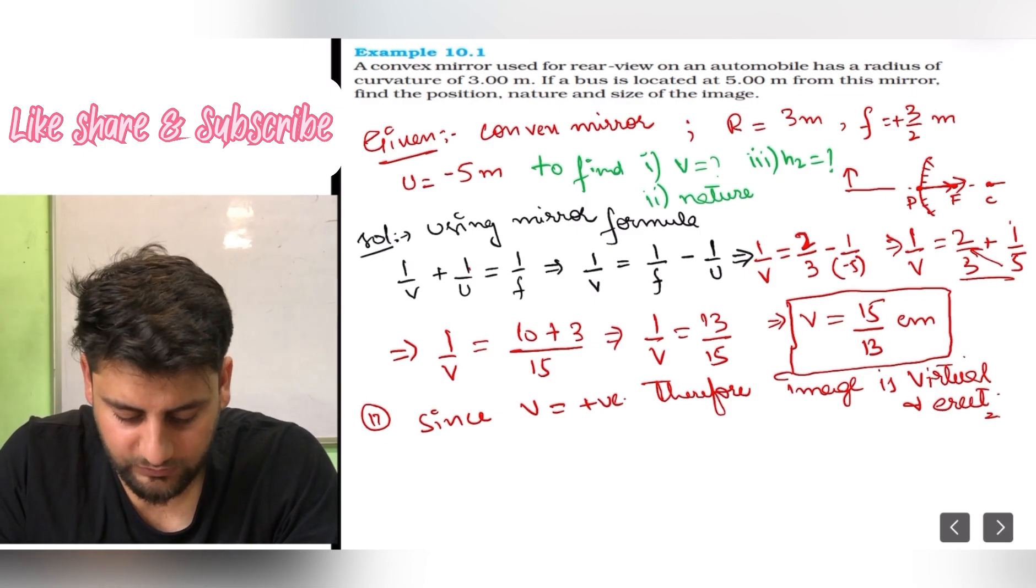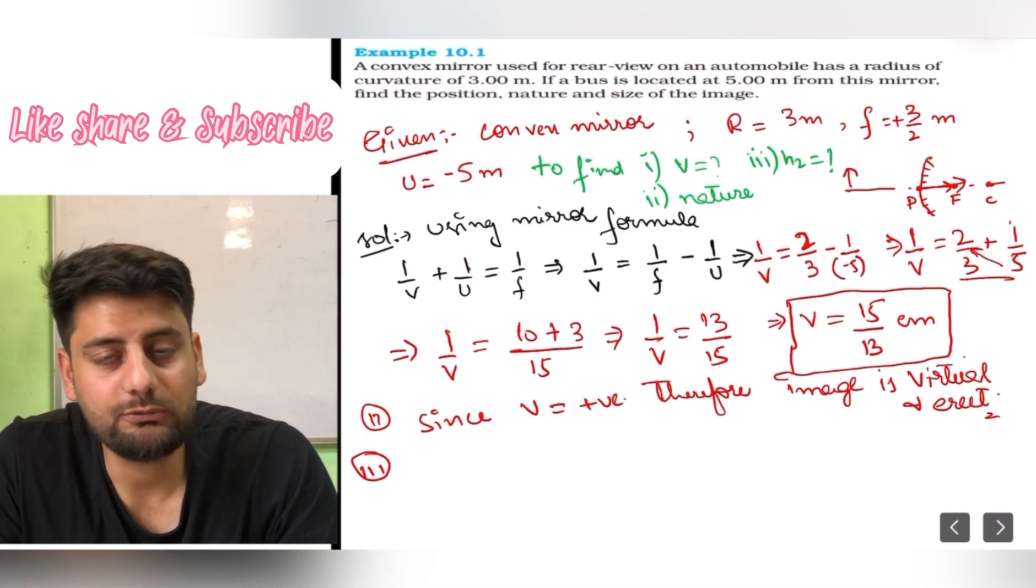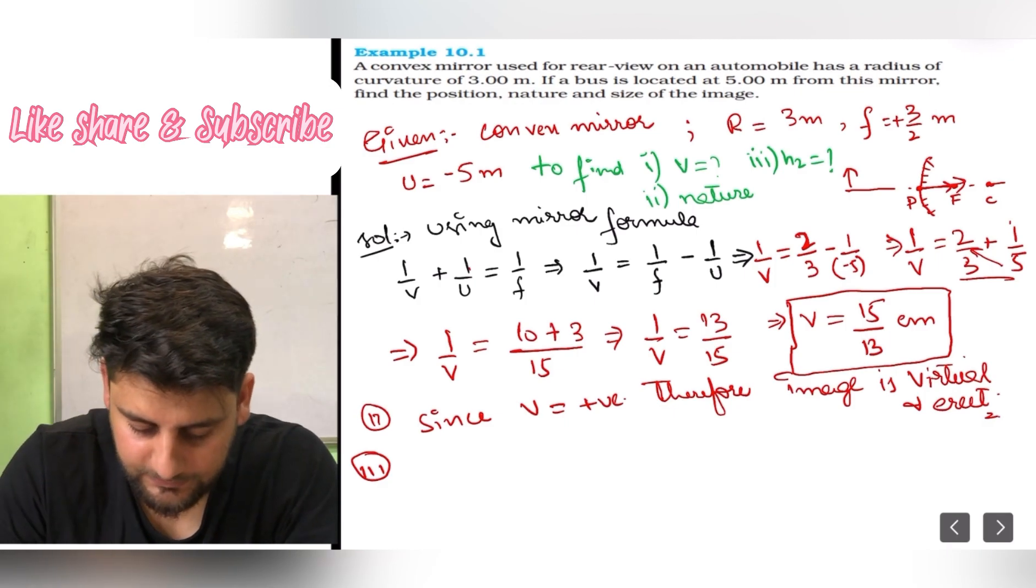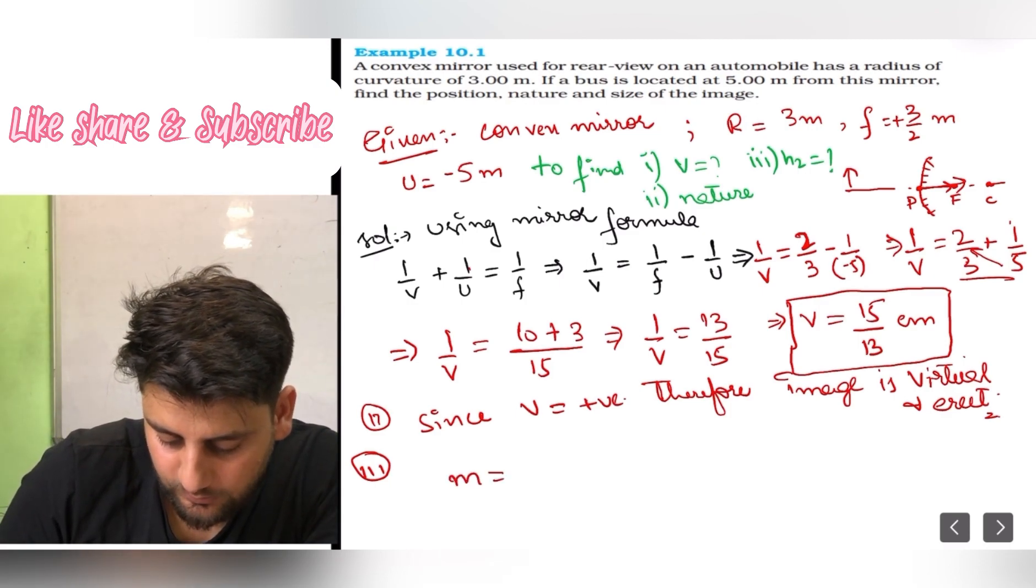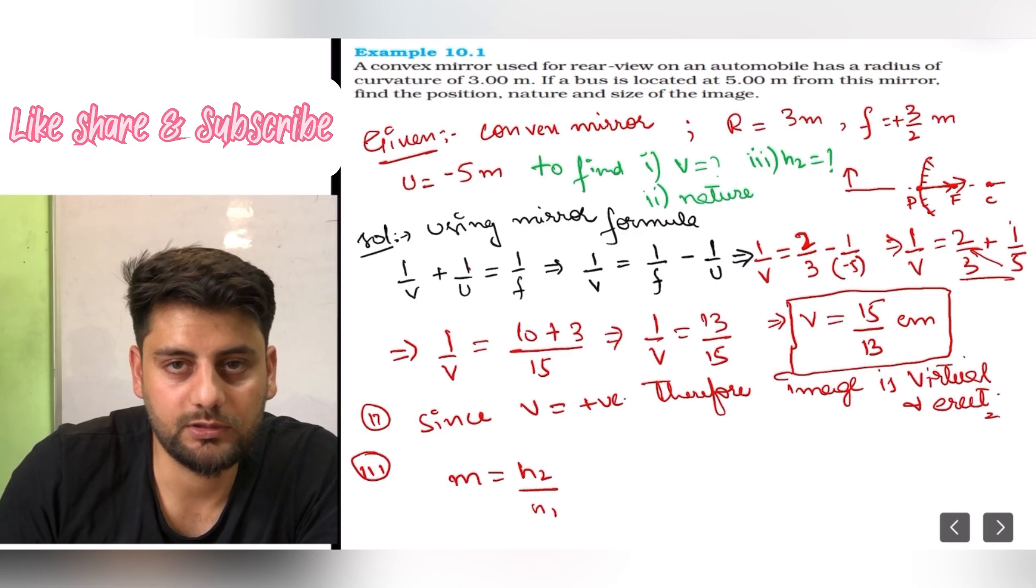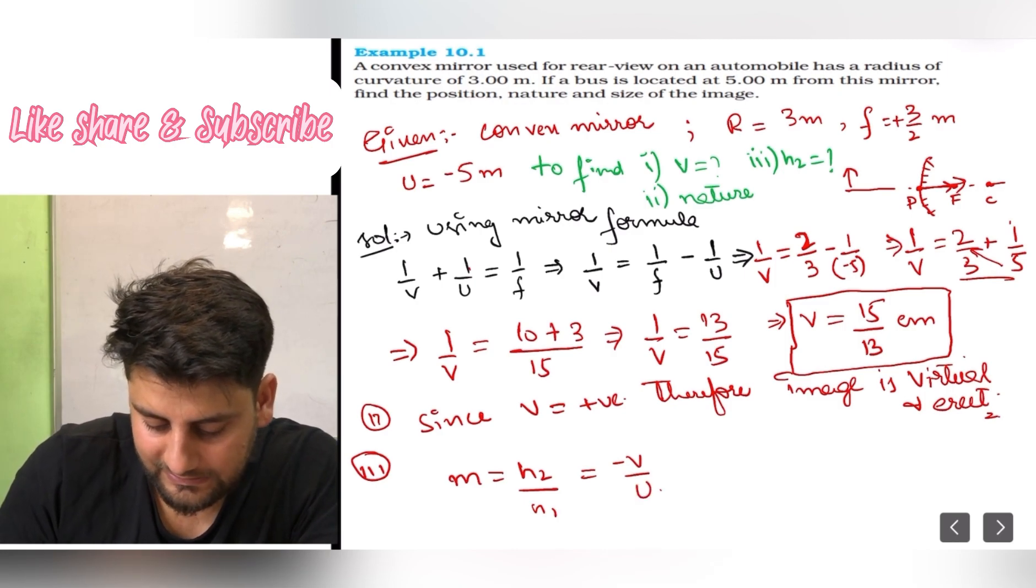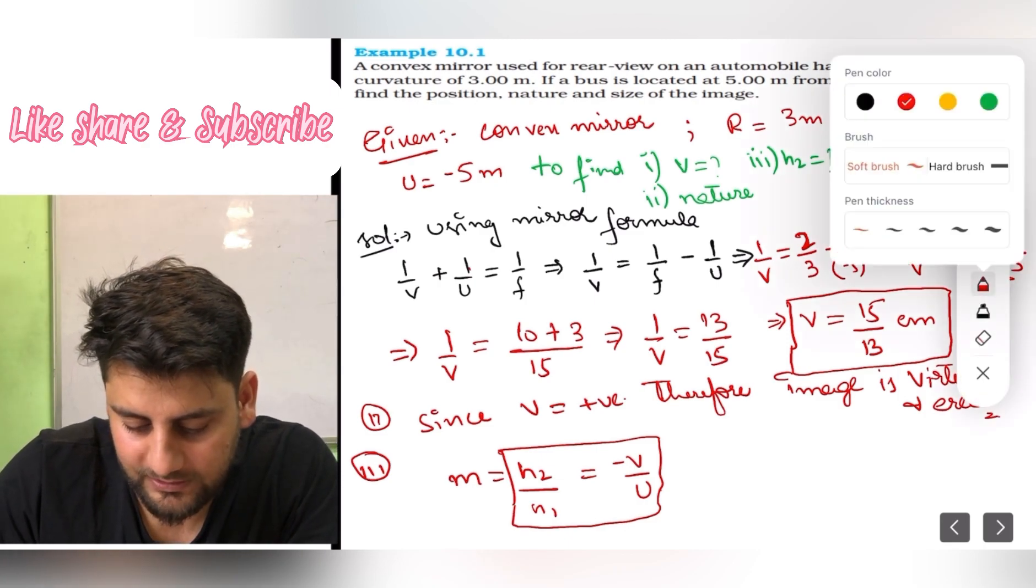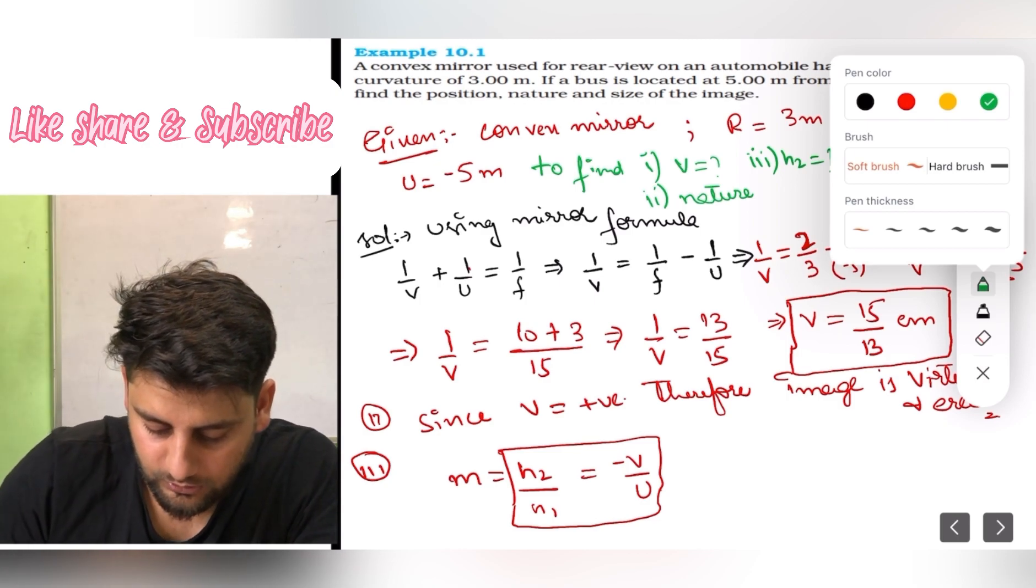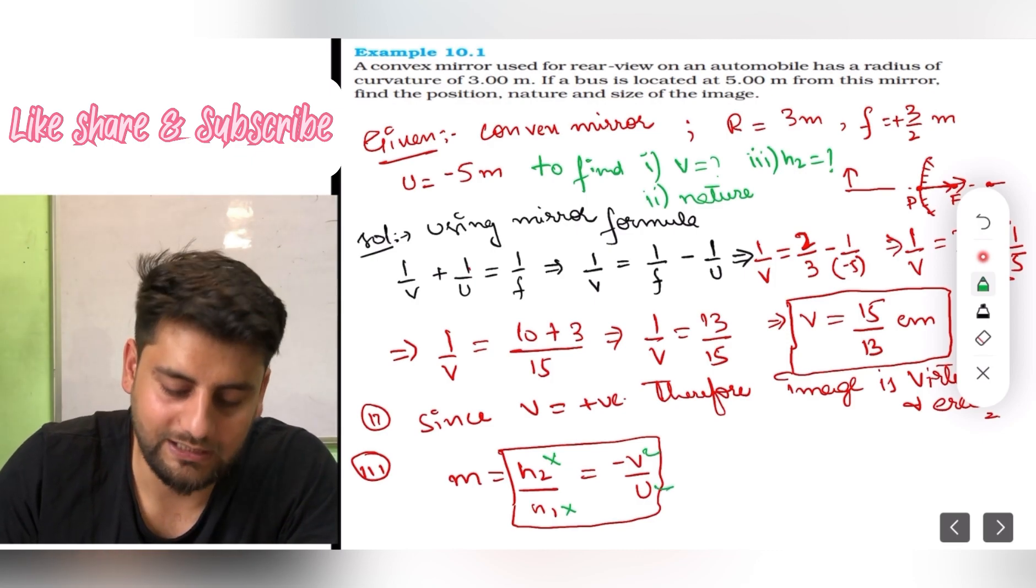Now we have to find the third thing, that is h2, height of image. When we talk about height of image, we have to keep one thing in mind. How will we find height of image? See, we have few formulas. m equals h2 upon h1, this is magnification formula. And we have one more formula, minus v upon u.